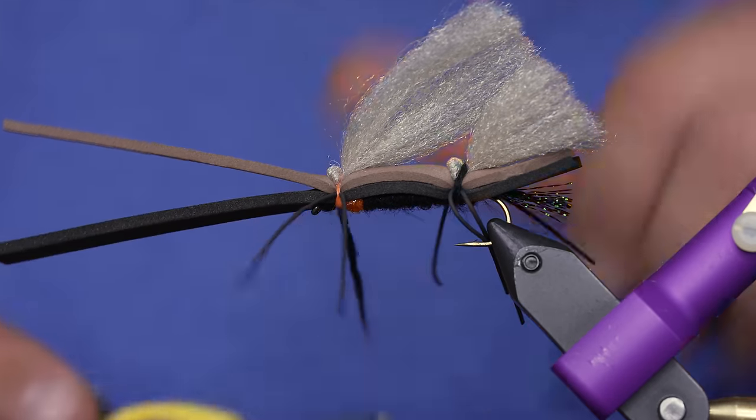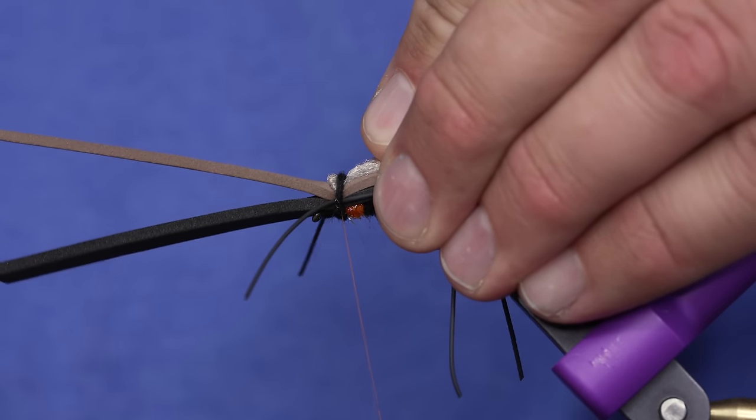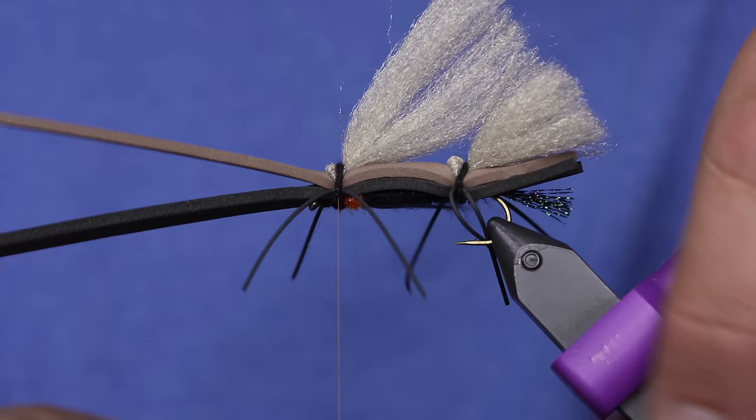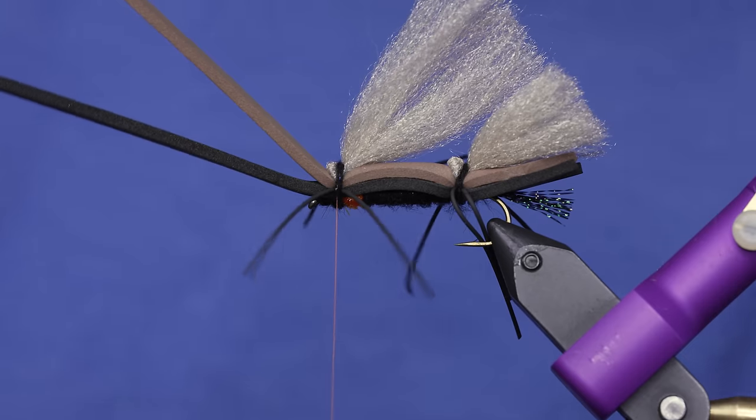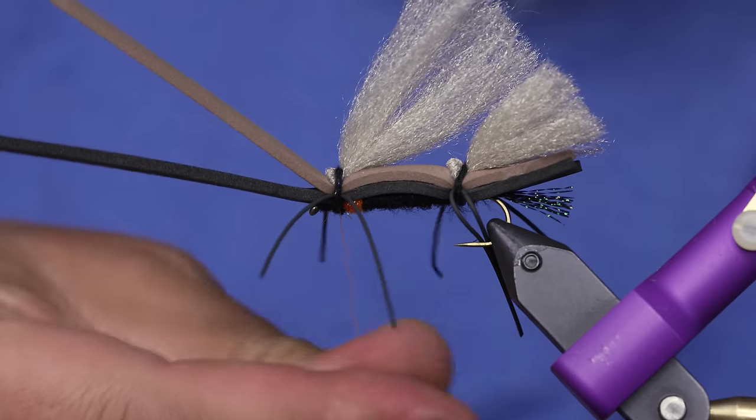And again, this is personal preference and effective fishing that has led me to leave a lot of the orange out of the body. From here I'm going to add a tiny little bit more dubbing on so I can wrap this up to the eye of the hook.